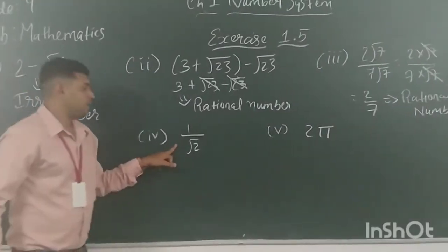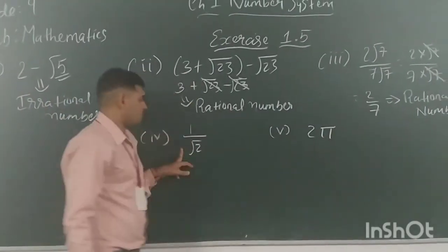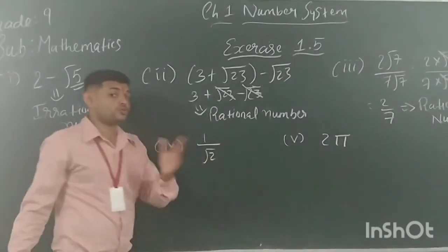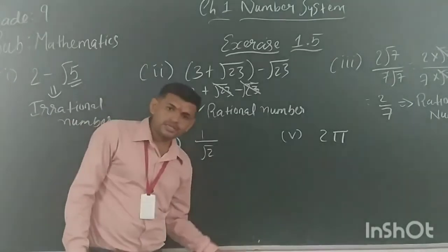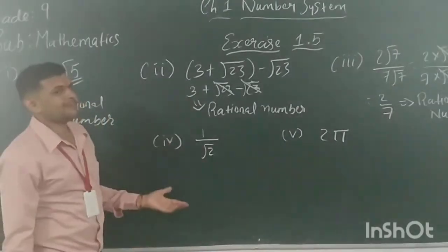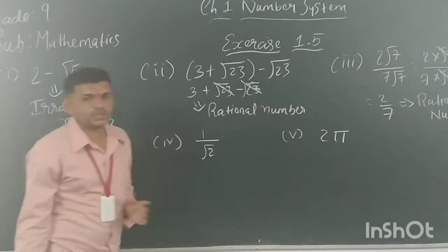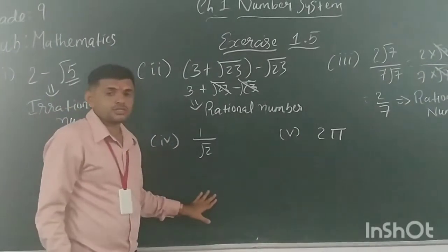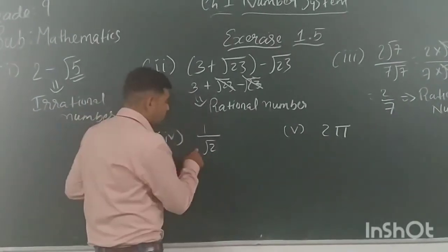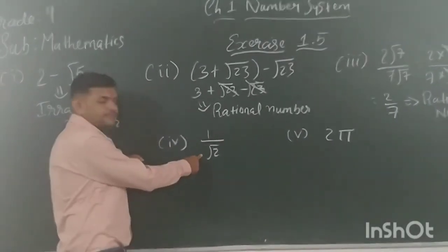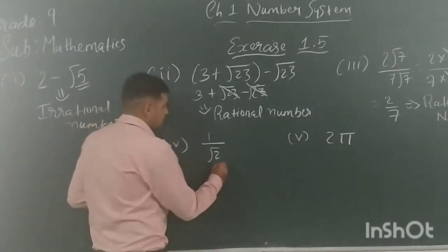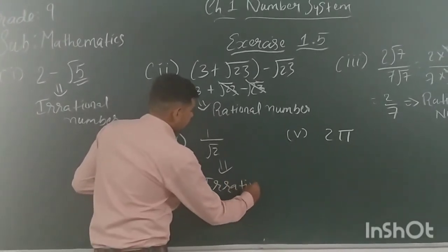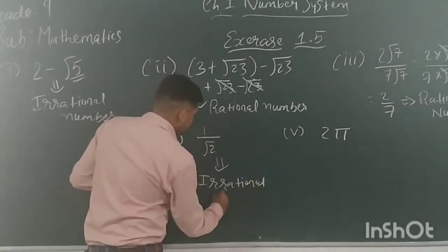1 upon root 2. Here we have root 2. No operation can be carried out further. You could try rationalizing the denominator, but root 2 would still remain. Since 2 is a prime number and the square root of a prime is irrational, this is an irrational number.